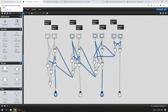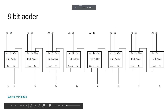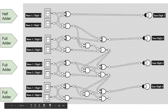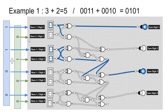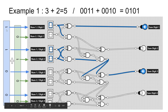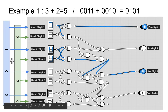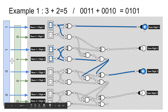Let's look at some worked examples. Example one: 3 plus 2 equals 5. Three is 0011 and two is 0010. The output is 0101, which is 5. Notice the right-hand digit is at the top here on the half adder — that's always on the right hand.